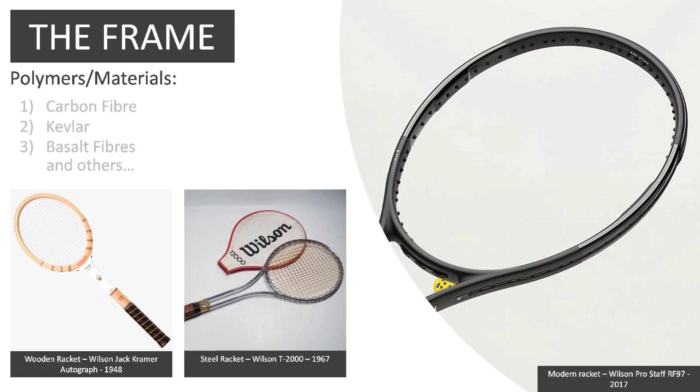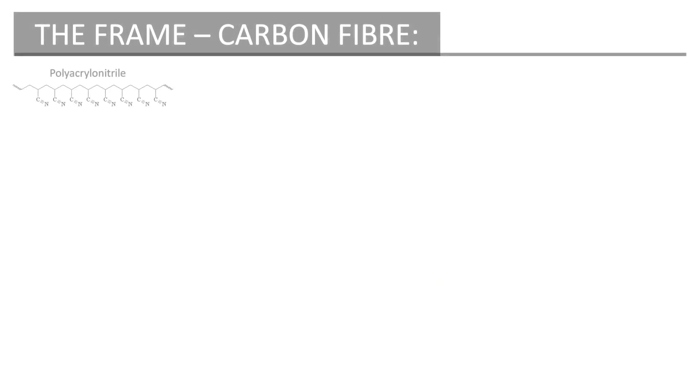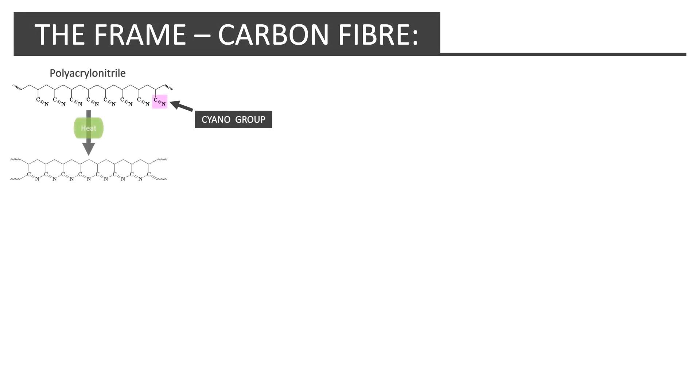However, modern rackets primarily consist of carbon fibre and a few other materials. Carbon fibre is a remarkable material, as it is lightweight but also very strong. To produce carbon fibre, the polymer polyacrylonitrile is used. This polymer is initially heated to form cyclic rings, rather than the cyano groups in the polymer chain.